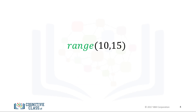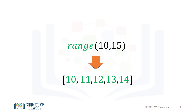If the range function has two inputs where the first input is smaller than the second input, the output is a sequence that starts at the first input, then iterates up to but not including the second number. For the input 10 and 15, we get the following sequence. See the labs for more capabilities of the range function. Please note, if you use Python 3, the range function will not generate a list explicitly like in Python 2.